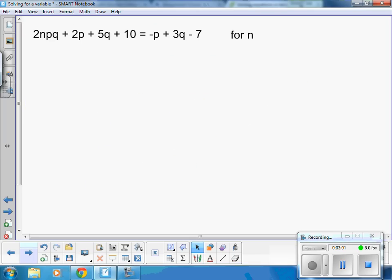This one's a little easier or a little harder, depending on how you're looking at it. I'm solving for N, so I want all my N terms on the left side, and that's the only one. That means I'm going to move the 2P, the 5Q, and the 10. I'm going to do that by doing the opposite of what they're doing right now.